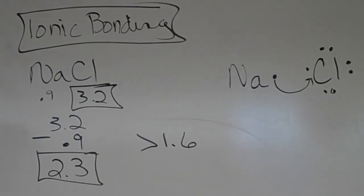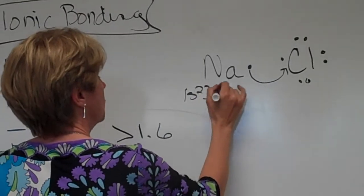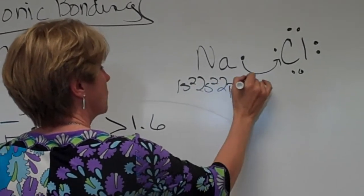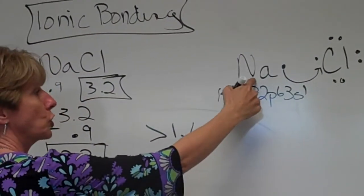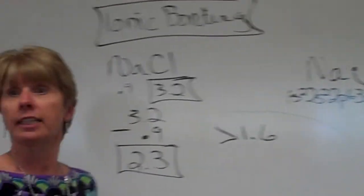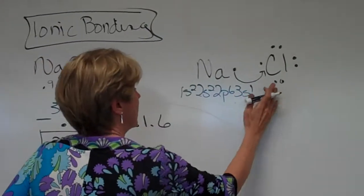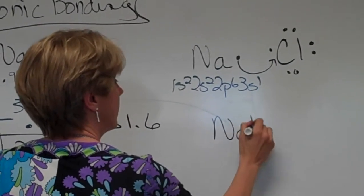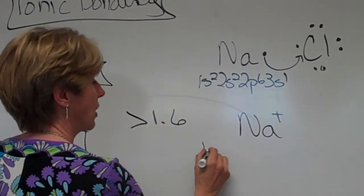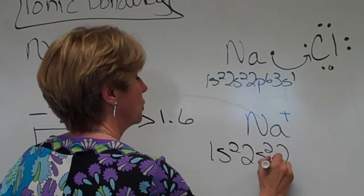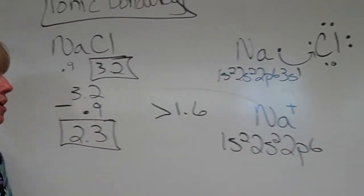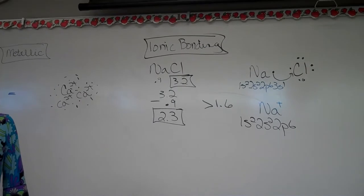Now remember, look at this. 1s2, 2s2, 2p6, 3s1. When sodium loses its 1 valence electron and becomes the sodium ion, look at how many valence electrons it thinks it has. 1s2, 2s2, 2p6. There's the sodium with a plus 1 charge.